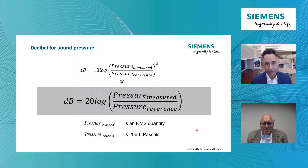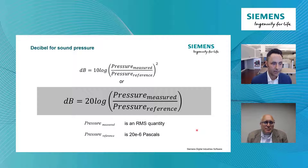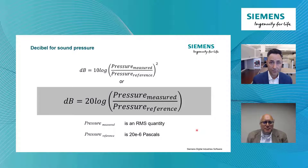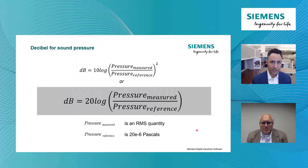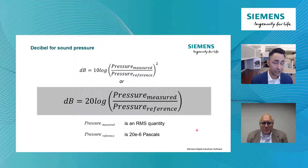We use it for pressure because of those aforementioned aspects of human hearing. We take pressure from our measurement microphone, we divide that by what we call our reference pressure — and we all need to agree what this reference pressure is — then we take that ratio, take the log of that, and multiply by 20. That's your sound pressure level in decibels.